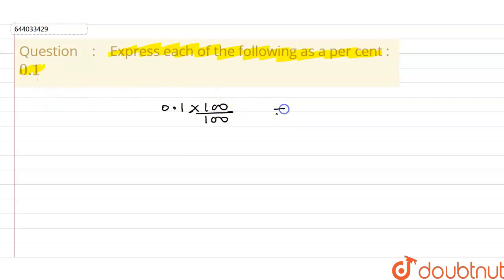So after multiplying 0.1 and 100, I get 10 upon 100. Okay, so here 1 by 100 is replaced by percent, so this can be written as 10 percent. So this is the answer of the given question.